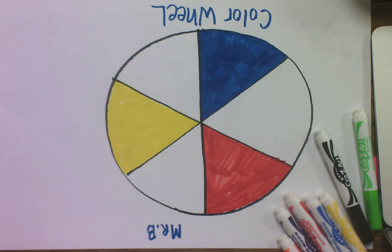Well, here we are one more time. We're working on our color wheel, which is one of our elements of art, that being color.